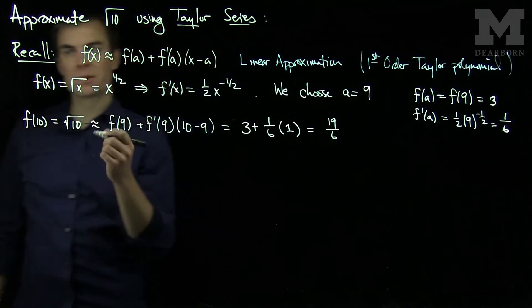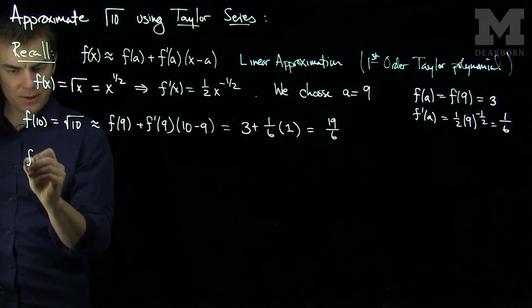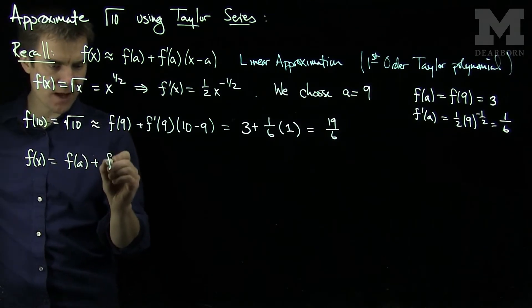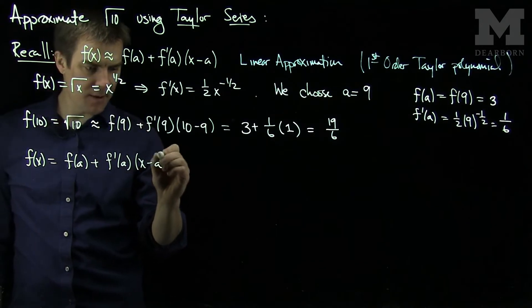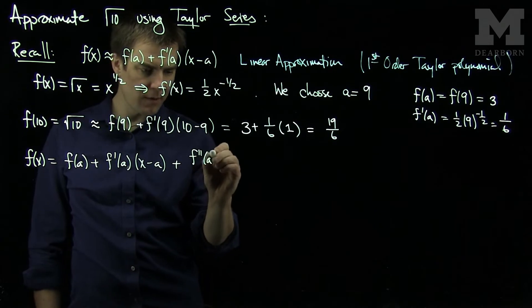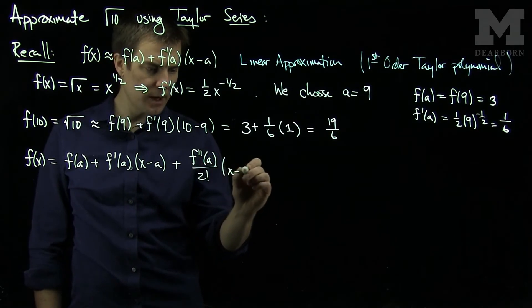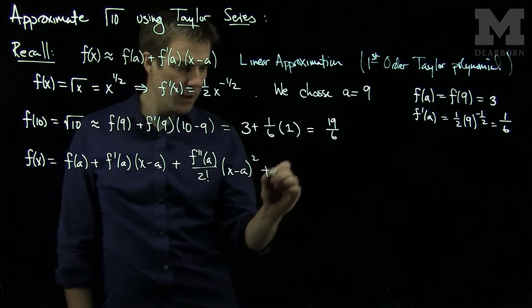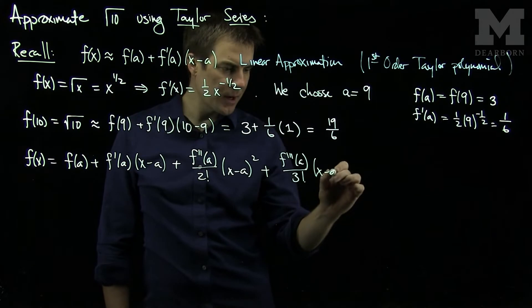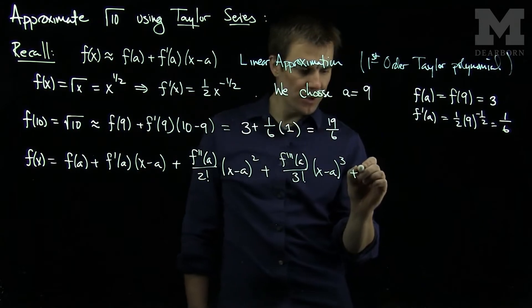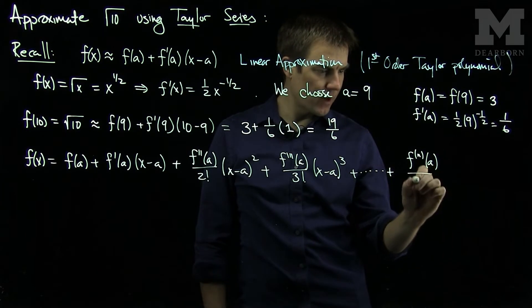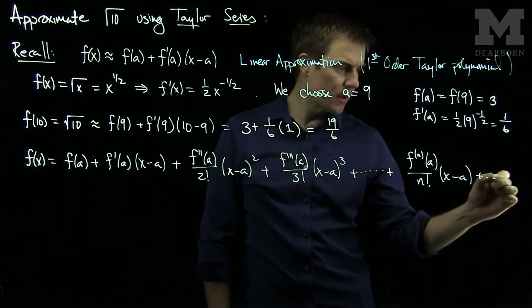Now we can go deeper into the Taylor series. So recall what the Taylor series will tell us. The Taylor series says that f(x) is f(a) plus f'(a)(x - a). There's my linear approximation part. Then we'll have f''(a) over 2 factorial (x - a) squared plus f'''(a) over 3 factorial (x - a) cubed plus and so on. Where the general term is the nth derivative at a over n factorial (x - a)^n plus dot dot dot.